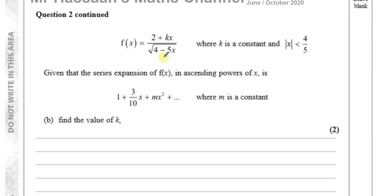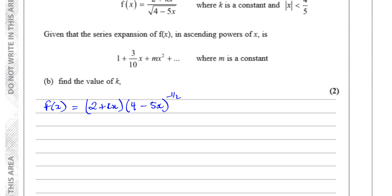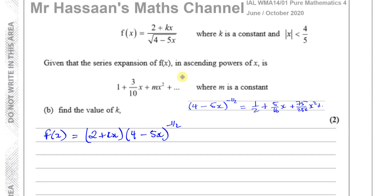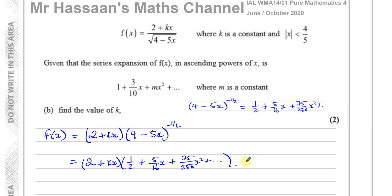We rewrite f(x) as (2 + kx)(4 − 5x)^(−1/2), which is (2 + kx) times the expansion we already found: (1/2) + (5/16)x + (75/256)x². Expanding this product must equal 1 + (3/10)x + mx².